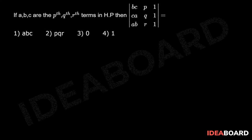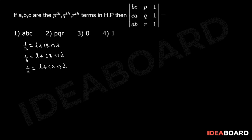Given A, B, C are the Pth, Qth, and Rth terms of an HP. Therefore 1/A, 1/B, 1/C will be the Pth, Qth, and Rth terms of an AP. Let L be the first term and D be the common difference of the AP. Therefore, 1/A = L + (P−1)D, 1/B = L + (Q−1)D, and 1/C = L + (R−1)D.